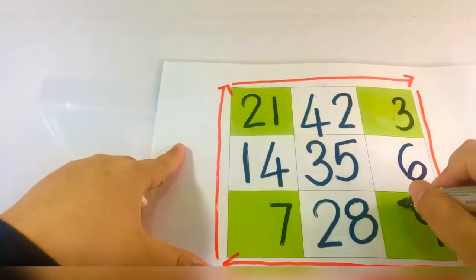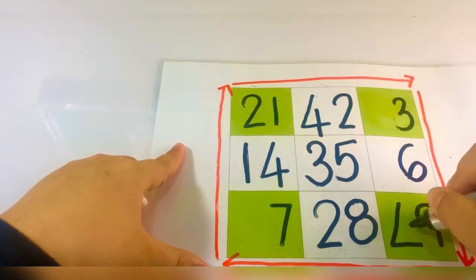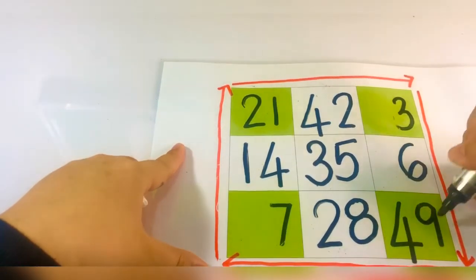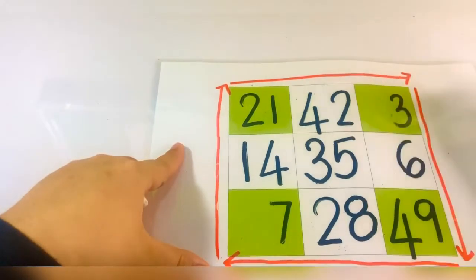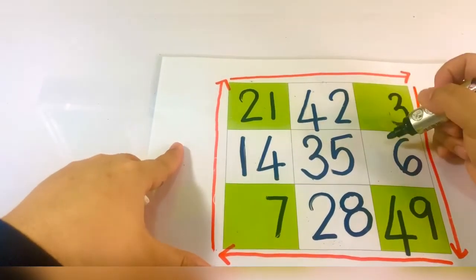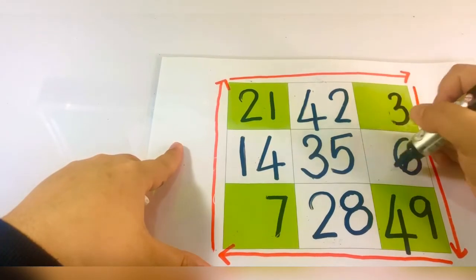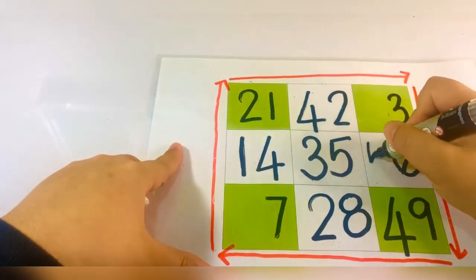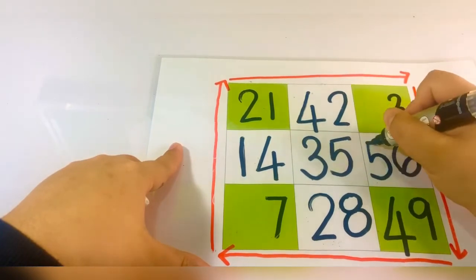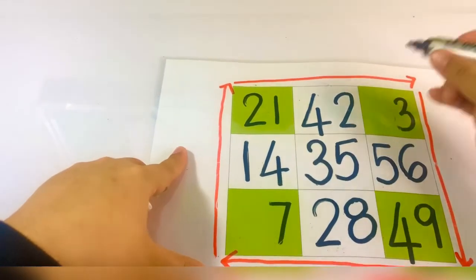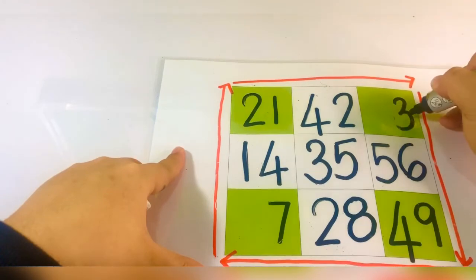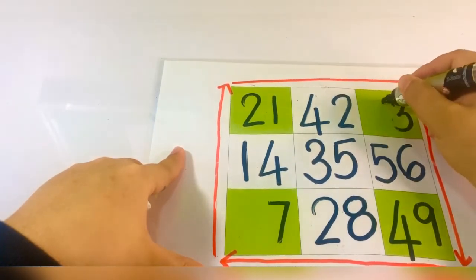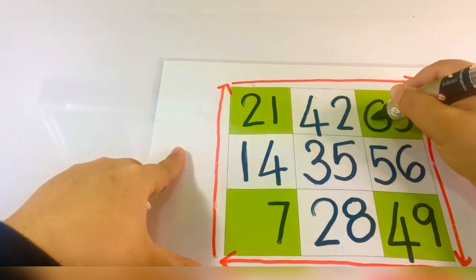Di sini pun 4. Sebab bila kita tulis nombor 4, dia menghasilkan 49 — 49 lebih besar daripada 42. Yang seterusnya, kita letak 4 — 46, 46 kecil daripada 49, jadi kita tidak boleh letak nombor 4. Makanya kita letak nombor 5. Sekiranya nombor 5 di sini, 53 kecil daripada 56. Jadi kita kena tulis nombor selepas nombor 5 iaitu nombor 6.